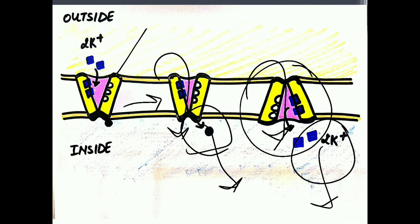The pump has returned to its original conformation and released potassium inside the cell. The pump is now ready to repeat this same sequence of events. This cycle continues as long as the ionic gradient needs to be re-established. Each cycle utilizes one ATP, releases three sodium ions out of the cell, and brings two potassium ions into the cell.